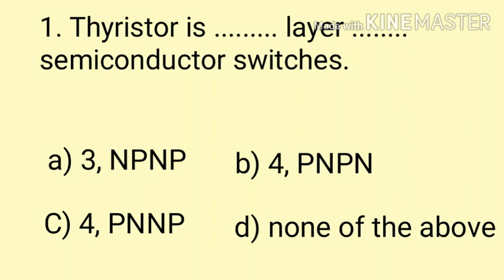Question number one: Thyristor is a __ layer __ semiconductor switch. Option A: 3 PNPNP, Option B: 4 PNPN, Option C: 4 PNNP, and Option D: none of the above. We know thyristor is a four layer semiconductor device, four layer PNPN semiconductor device. Here the correct answer is option B, four layer PNPN semiconductor switches.